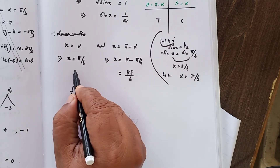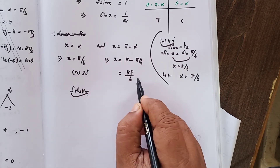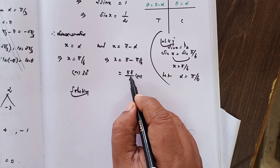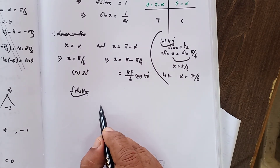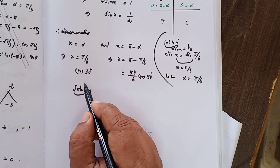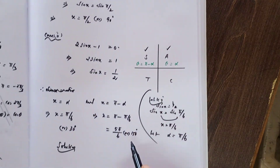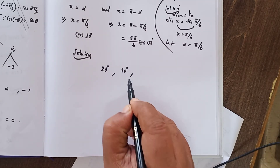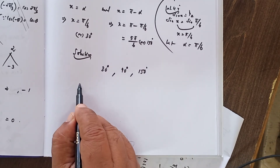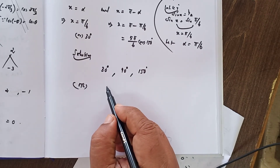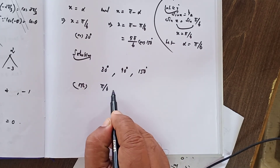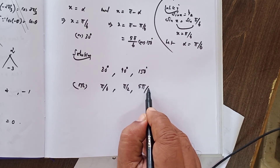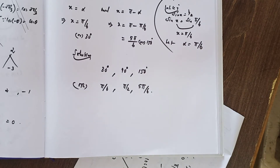So π/6 equals 30° and 5π/6 equals 150°. Writing the solutions in order: 30°, 90°, 150°. Or in radians: π/6, π/2, 5π/6. Three subdivisions are over. Now subdivision number 4.